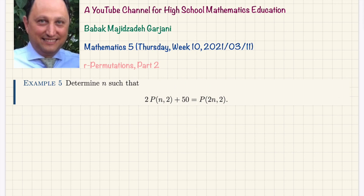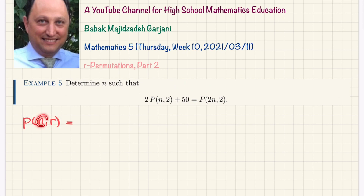We were supposed to determine n from this equation — this is not an identity we want to show, we are supposed to use this equality to find n. We also need to use the formula we learned about in the previous session. The formula was: given p, n, and r, where n is a natural number less than or equal to n, the formula is n factorial divided by n minus r factorial. The first number goes to the numerator factorial, and the difference goes to the denominator.